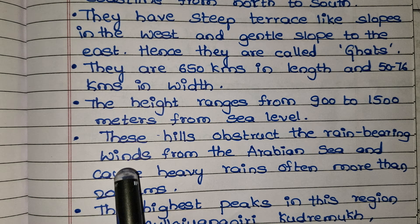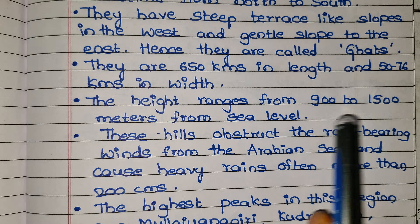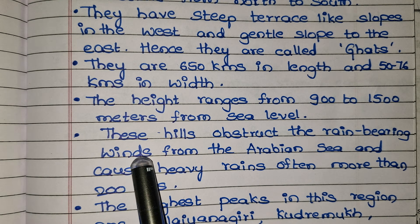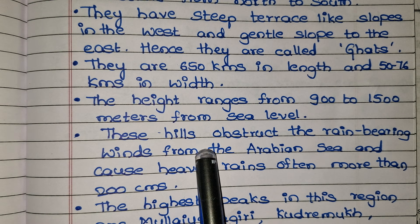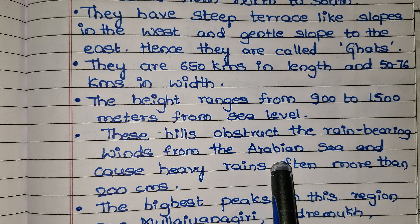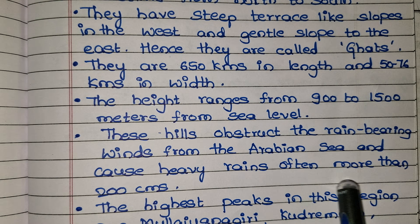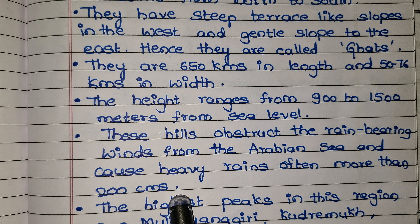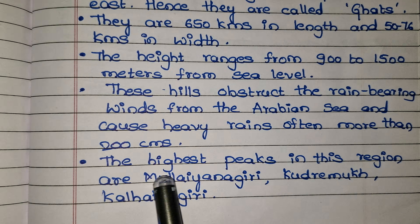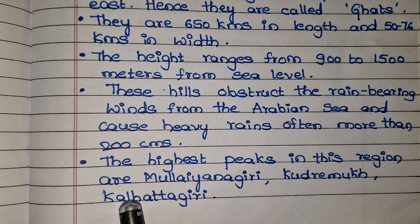The height of the Malnad ranges from 900 to 1500 meters above sea level. These hills obstruct the rain-bearing winds from the Arabian Sea and cause heavy rains, often more than 200 centimeters. The highest peaks are found in this region.